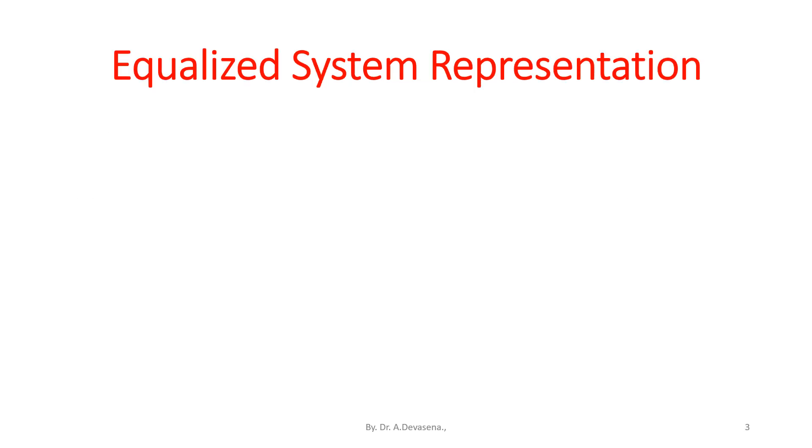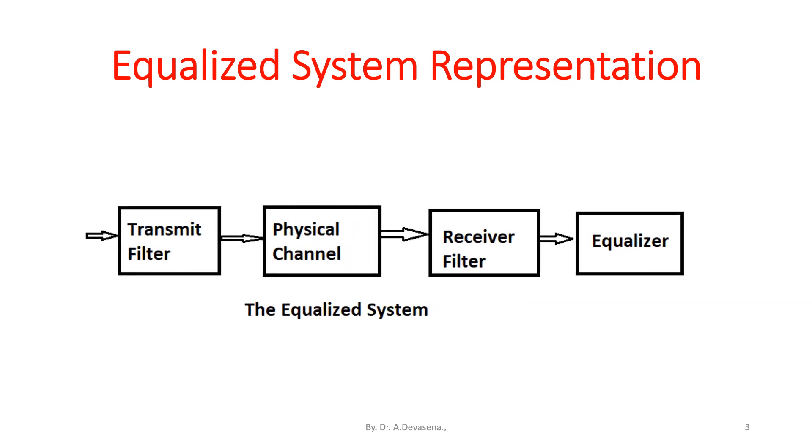Here is a representation of equalized system. The signal is applied to transmit filter. From that, it is passed through physical channel. And from the physical channel, it reaches the receiver filter. From the receiver filter, it reaches equalizer. It is represented here.